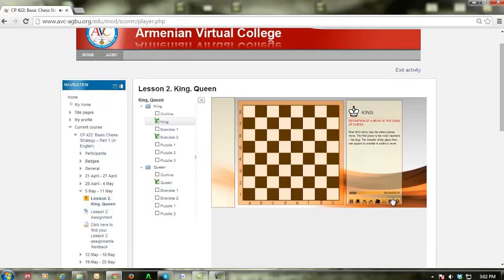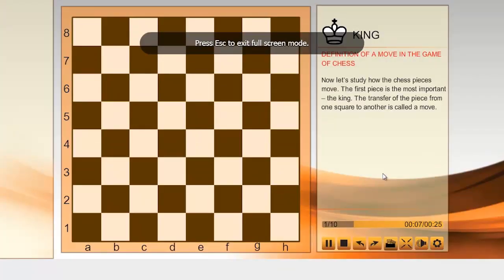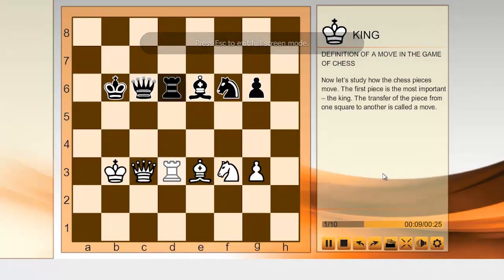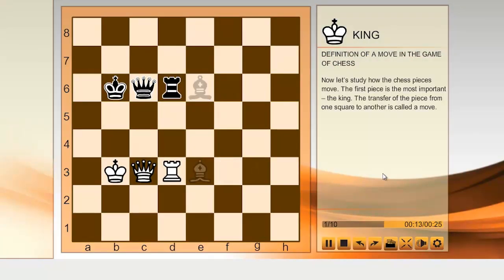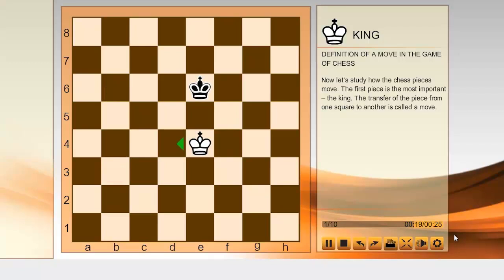King. Definition of a move in the game of chess. Now let's study how the chess pieces move. The first piece is the most important, the king. The transfer of the piece from one square to another is called a move.